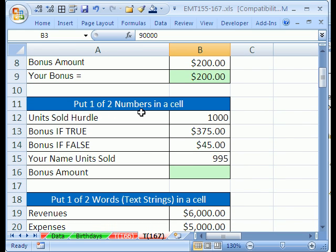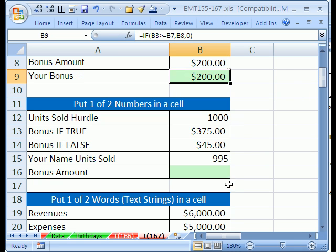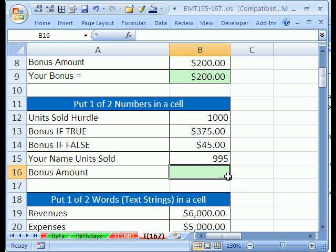Now we want to put one of two numbers in a cell. Up here we had two numbers, but we typed one of them in. Let's see how to do two cell references. In this situation, we have the unit sold hurdle of 1,000, and here's your unit you sold. So we'll use the IF to put one of two things, 375 or $45. So you get the bonus, or if you don't make your hurdle, you still get 45 bucks.